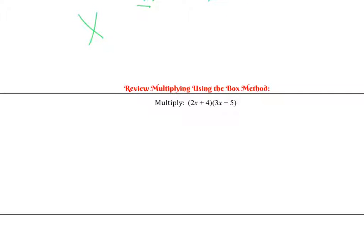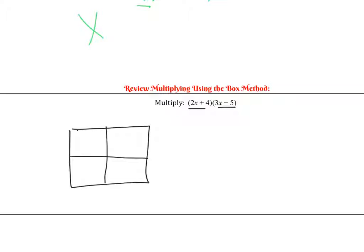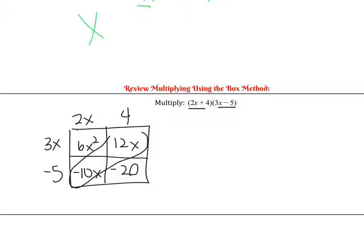Let's remember how to multiply using the box method first, so that when we go backwards it'll make sense. When multiplying using the box method, we do our box and write our factors on the outside: 2x and 4, and 3x and negative 5. When we multiply, 3x times 2x is 6x squared, 4 times 3x is 12x, negative 5 times 2x is negative 10x, and negative 5 times 4 is negative 20. Then we simplify: 6x squared, then negative 10 plus 12 is positive 2x, and negative 20.